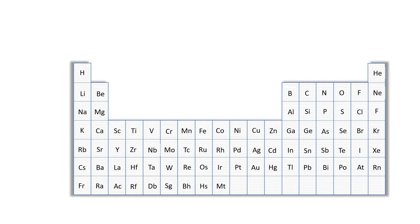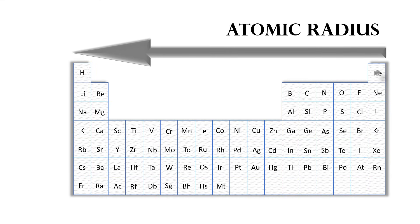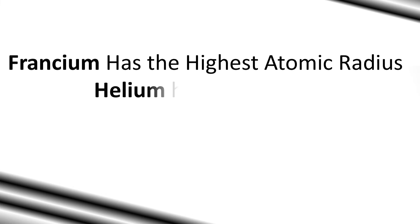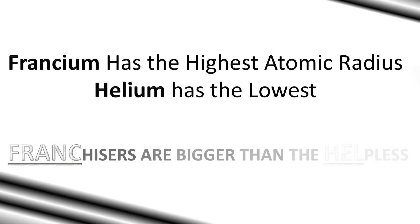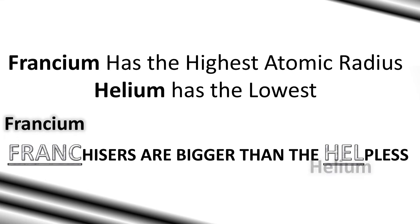The general trend for the atomic radius is that when you go from right to left of the periodic table the radius increases, as well as when you go from the top to the bottom of a group. Francium has the highest atomic radius, while helium has the lowest. You can remember that by the phrase 'franchisors are bigger than the helpless' — franchisors to remember francium, and helpless to remember helium.